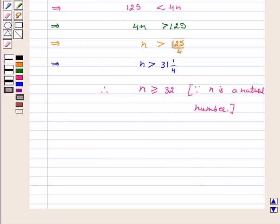Our answer for the above question is that the 32nd term of an AP is its first negative term.